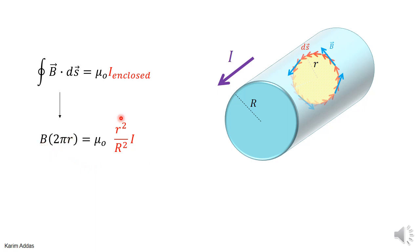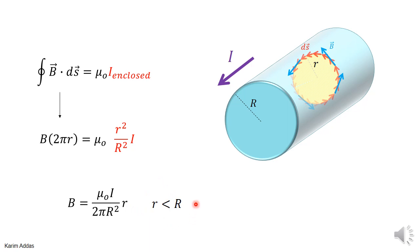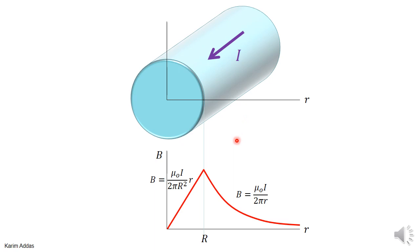Substituting I_enclosed into Ampere's law, one factor of r cancels, giving the magnetic field inside as B = μ₀I r / (2πR²). This means the magnetic field increases linearly as you move outward from the center. From zero to R it increases linearly, reaching its maximum at the surface. From R to infinity it decreases as 1/r, going to zero at infinity.